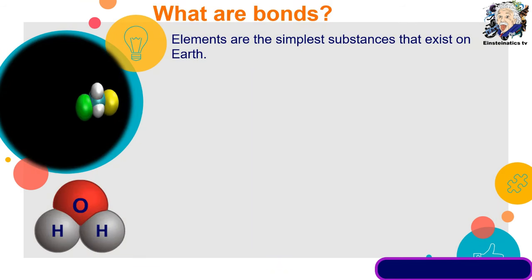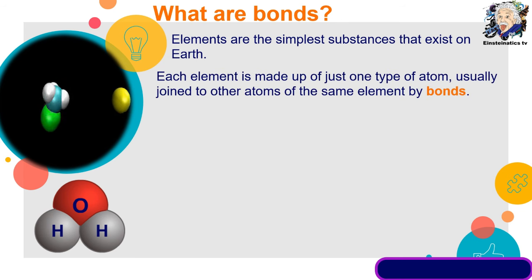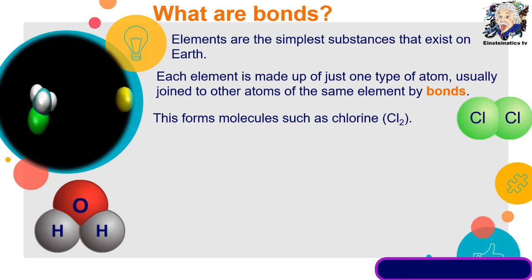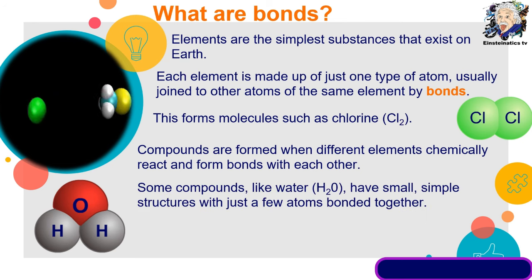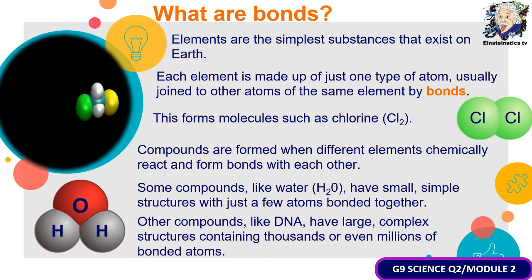Elements are the simplest substances that exist on Earth. Each element is made up of just one type of atom, and these atoms are joined using bonds — forming molecules such as chlorine gas, Cl₂. Compounds are formed when different elements chemically react and form bonds with each other. Some compounds like water (H₂O) have small simple structures with just a few atoms bonded together, while others like DNA have large structures containing thousands or even millions of bonded atoms.